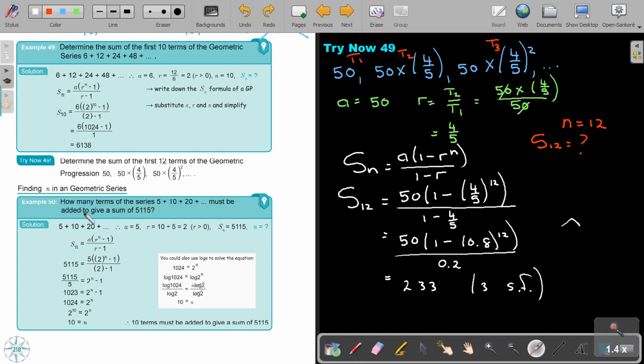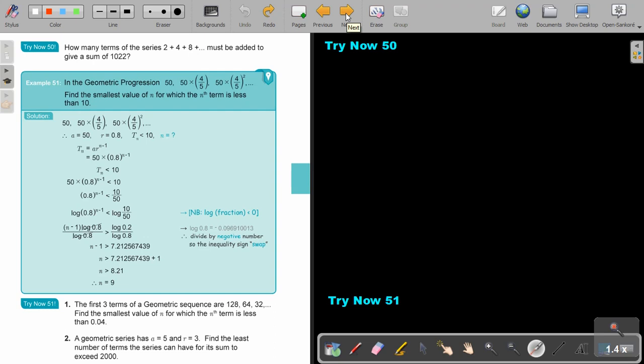How many terms of this series must be added to give a sum of 5115? So again, find first your value of R. So R is 2. So the R's will stand in front. And again, put it in the place of S_n. So you simplify there. And luckily this is 1. So you end up there. Divide 5, divide 5. And now you can either use indices or you can use logs. There I showed you the log method.